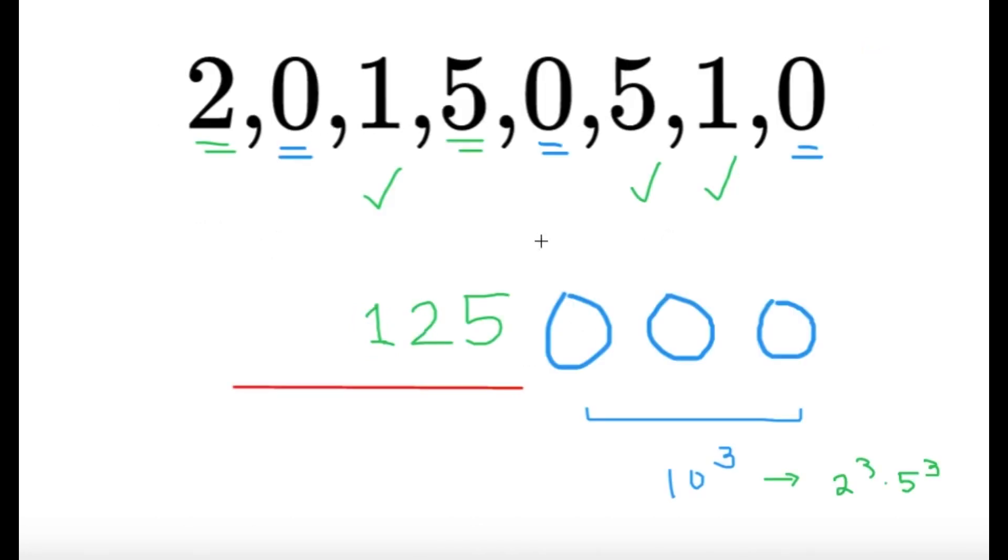So since we have the last k digits here to be 1, 2, 5, 0, 0, 0, you can verify this on your own, but this number is divisible by 5 raised to 6.